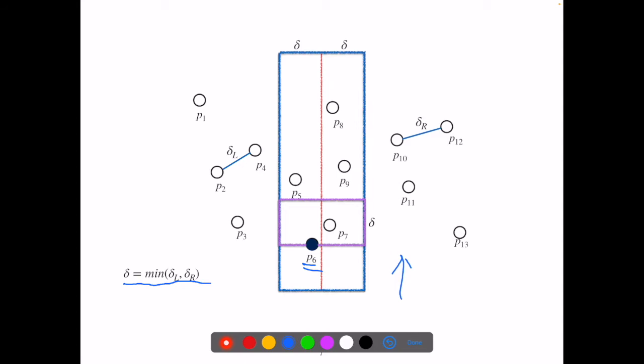For instance, we check p6, see how many points are in its purple box, compute all the distances and see if any of them is less than delta. Then we continue with p7 and so on.